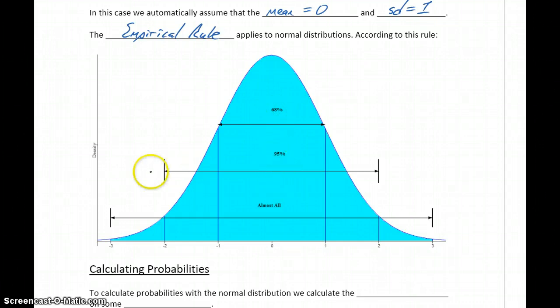We have 95% of all our data values occurring between two standard deviations above and below the mean. And between three standard deviations below and three standard deviations above, we have almost all of our data occurring.